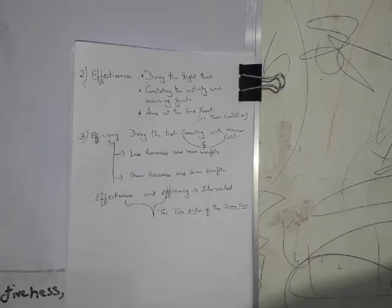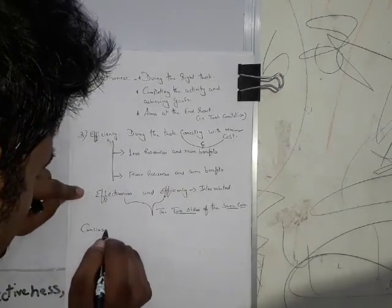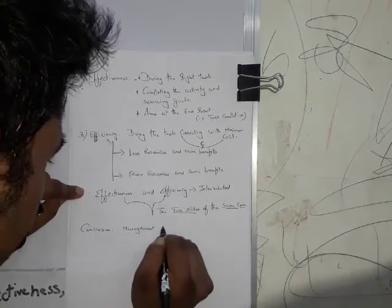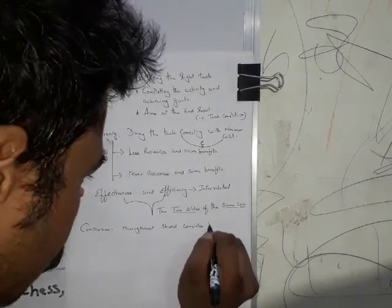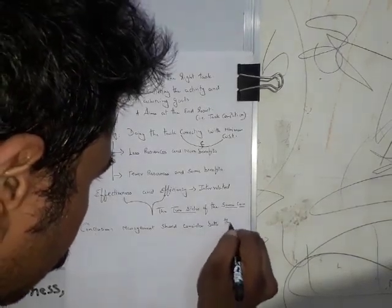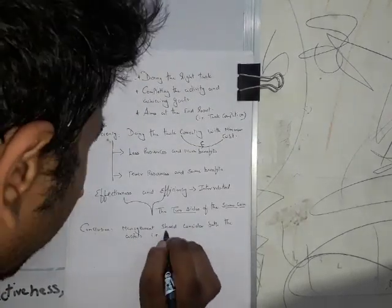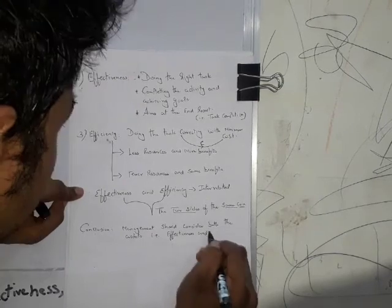So to conclude, we can say that for the long run survival and growth of business, its management must try to achieve goals - effectiveness - at a minimum cost. So to conclude, management should consider both the aspects.